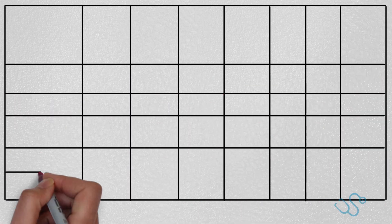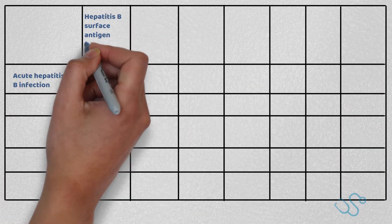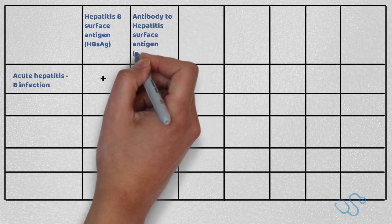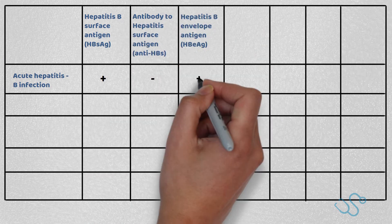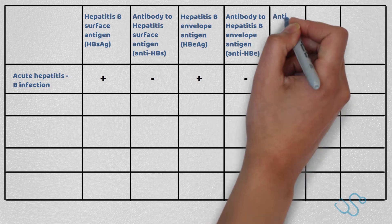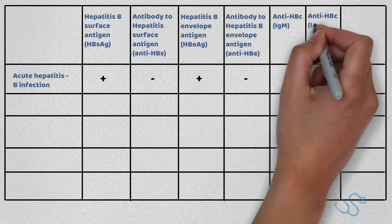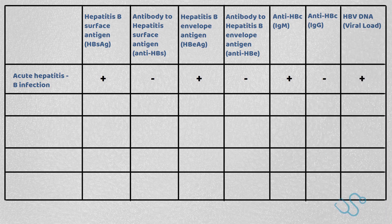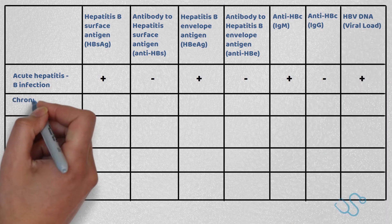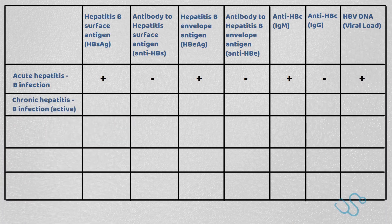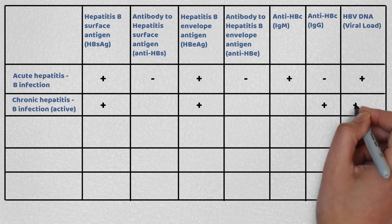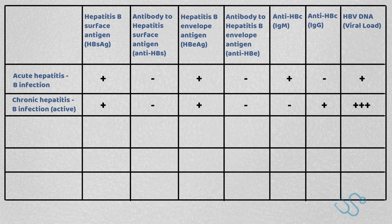We've tried to simplify this in a table. The five scenarios you should know: if you have acute Hepatitis B, you'll see the Hepatitis B surface antigen, the Hepatitis B envelope antigen, the IgM antibody against the Hepatitis B core antigen, and evidence of acute viral DNA load. In chronic active Hepatitis B, you'll see the surface antigen, the envelope antigen, the IgG antibody against the core antigen, and a high Hepatitis B DNA viral load.